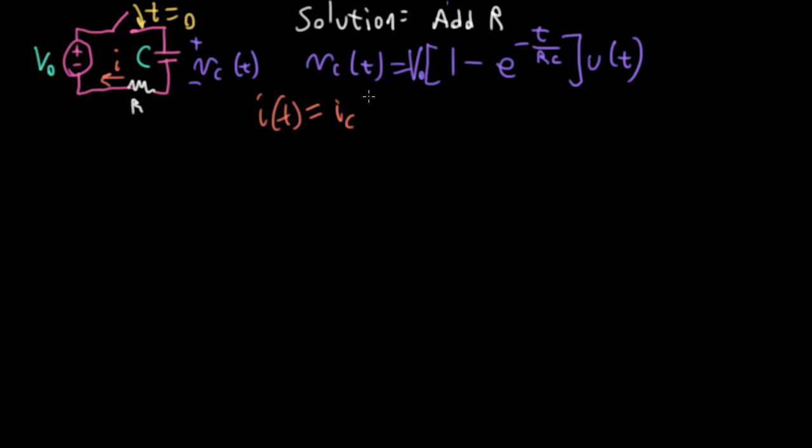So what about the current? The current is the current through the capacitor, which is going to be C times the derivative of this. So, that's going to be V0, and then I'm going to have E minus T over RC. When I take the derivative, the minuses cancel. Then I'm going to have all of this over RC times UT, and then the C's here are going to cancel. And technically speaking, when I take this derivative, I'll also want to take the derivative of UT. That gives me a delta function, but when I plug in T equals 0 here, this whole thing equals 0.